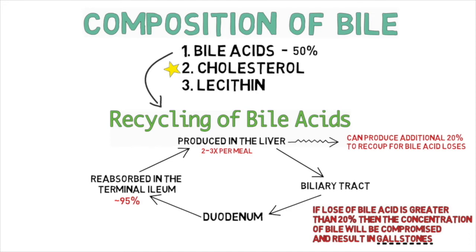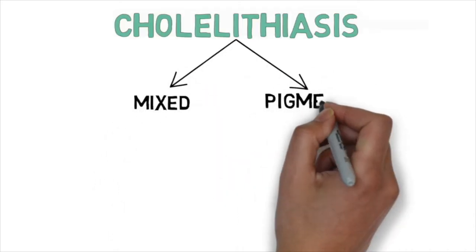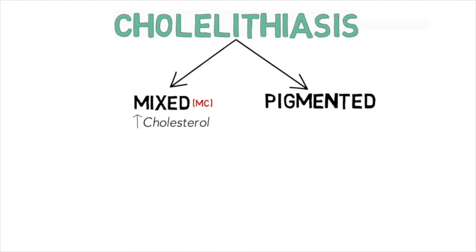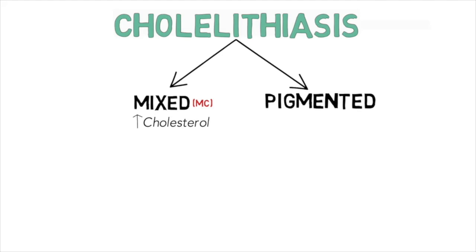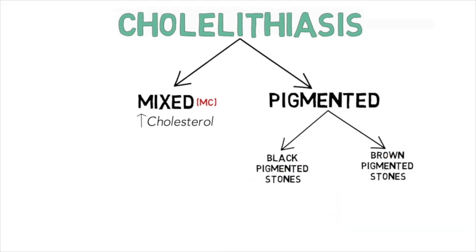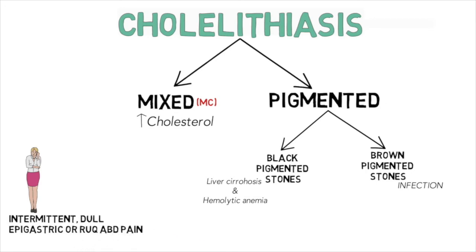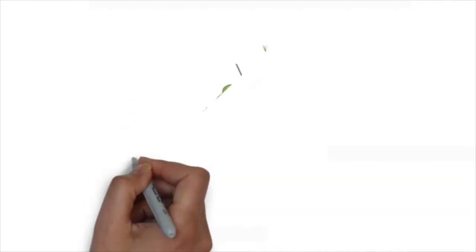Now let's talk about pathologies of the gallbladder, starting with cholelithiasis, also known as gallstone disease. There are two types of gallstones: mixed and pigmented. Mixed stones are the most common in the western world, containing a high proportion of cholesterol, and account for about 75% of stones. Pigmented stones are divided into black pigmented stones, seen with liver cirrhosis and hemolytic anemia, and brown pigmented stones, associated with infection. Patients with cholelithiasis typically present with intermittent colicky dull pain in the epigastric and right upper quadrant region due to the gallbladder contracting against the stones.